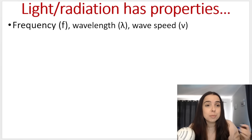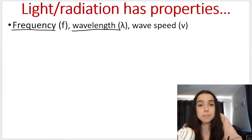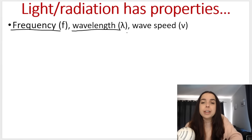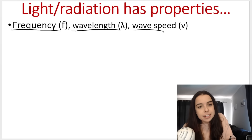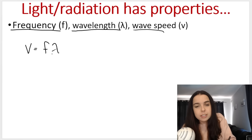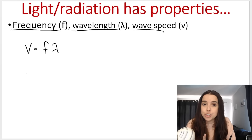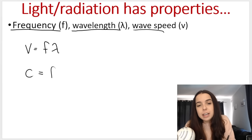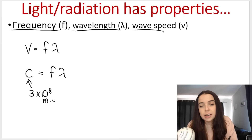Remember, light has certain properties we learned about in grade 10. Light has a wavelength measured in metres, and a frequency measured in hertz. We can calculate the wave speed using the formula: speed equals frequency times wavelength. All electromagnetic radiation, including visible light, travels at the speed of light, represented by the symbol C, which is 3 × 10⁸ metres per second.